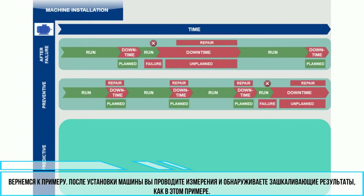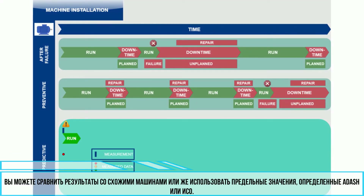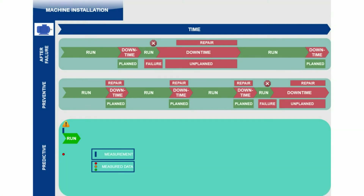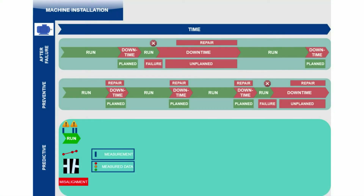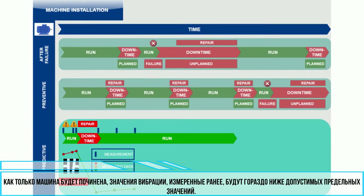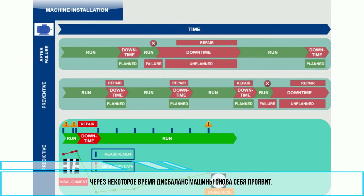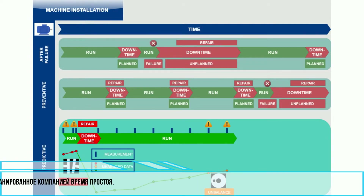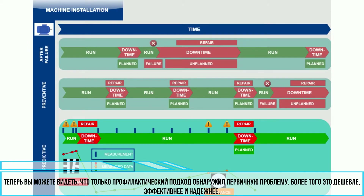Back to our example. After the machine installation, you take measurements and the values are very large in this example. You can compare values with other similar machines, or use ADASH or ISO limits. Something is wrong with the machine. Measured vibration data tells us that the problem is misalignment, probably caused by poor installation. Once the machine is repaired, the vibration values already measured are now well below the limit. After some time, the machine's unbalance will begin to appear slightly. We prepare balancing for the next factory downtime. You can see that only the predictive approach discovered the initial problem, and overall it is cheaper, more effective, and reliable.